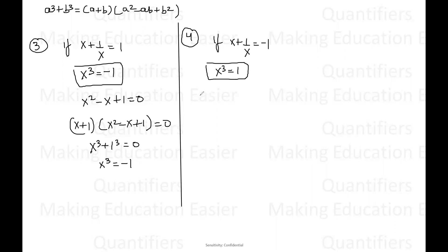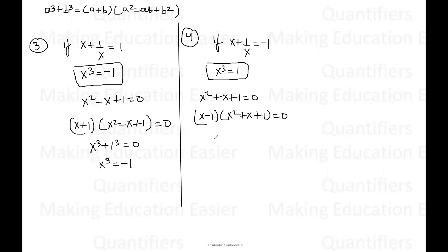From the original equation we can write X squared plus X plus one is equal to zero. Now I'm multiplying the complete equation by X minus one. So we'll get X minus one into X squared plus X plus one is equal to zero. This is basically X cubed minus one cubed, so from here we get X cubed is equal to one.